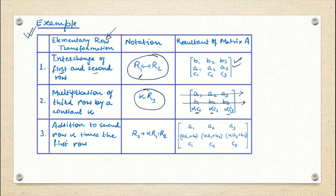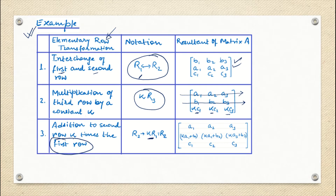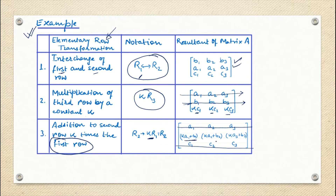The third operation is: addition to the second row of K times the first row. That means you first multiply K times R1, then add it to R2. So the second row is replaced with K·R1 + R2. The first and third rows remain as they are. In the second row, B1 becomes K·A1 + B1, B2 becomes K·A2 + B2, and B3 becomes K·A3 + B3.